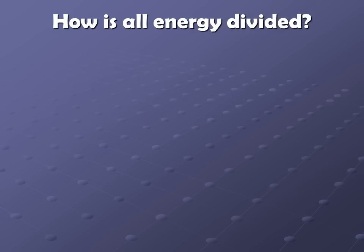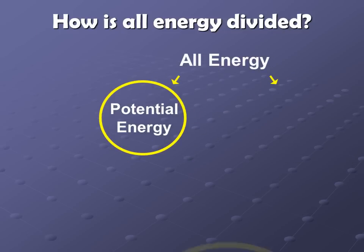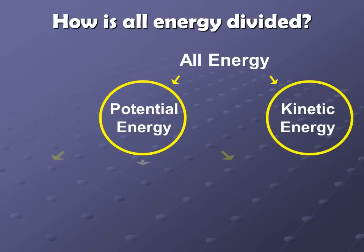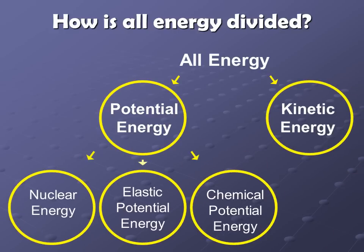First off, how is all energy divided? For sixth grade, we basically divide it into just two categories — it's either going to be potential energy or kinetic energy. At times we went into more details: potential energy could be broken down into nuclear energy, elastic potential energy, and chemical potential energy. We did the same thing for kinetic energy as well. Please see your notes and foldables that you already have for more details on that.